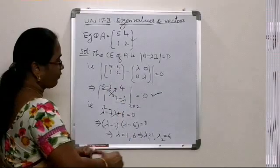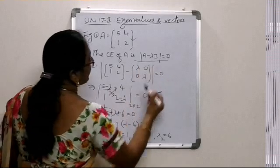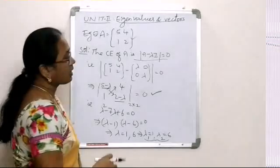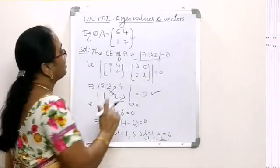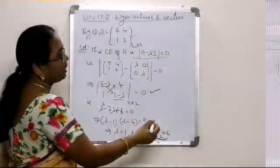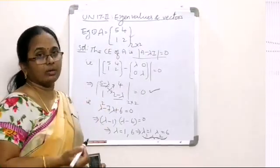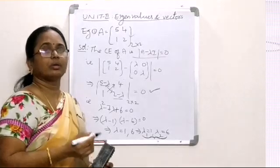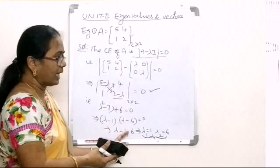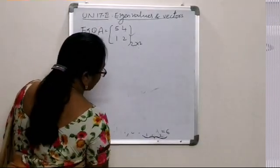With this we have solved the characteristic equation and calculated the eigenvalues. One thing to remember: because the matrix has order 2 by 2, we have two eigenvalues. If the matrix were 3 by 3, we would have three eigenvalues, which may be distinct or repeated.